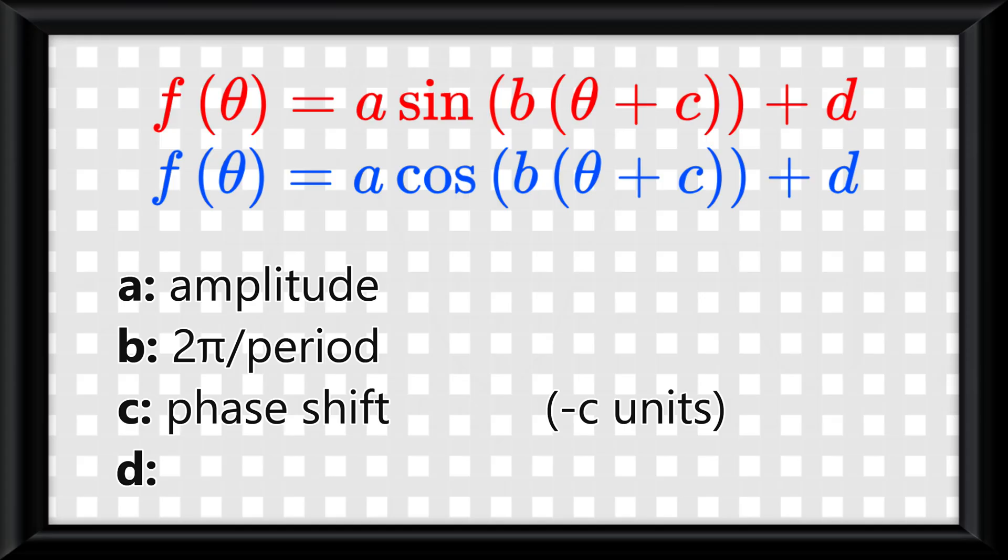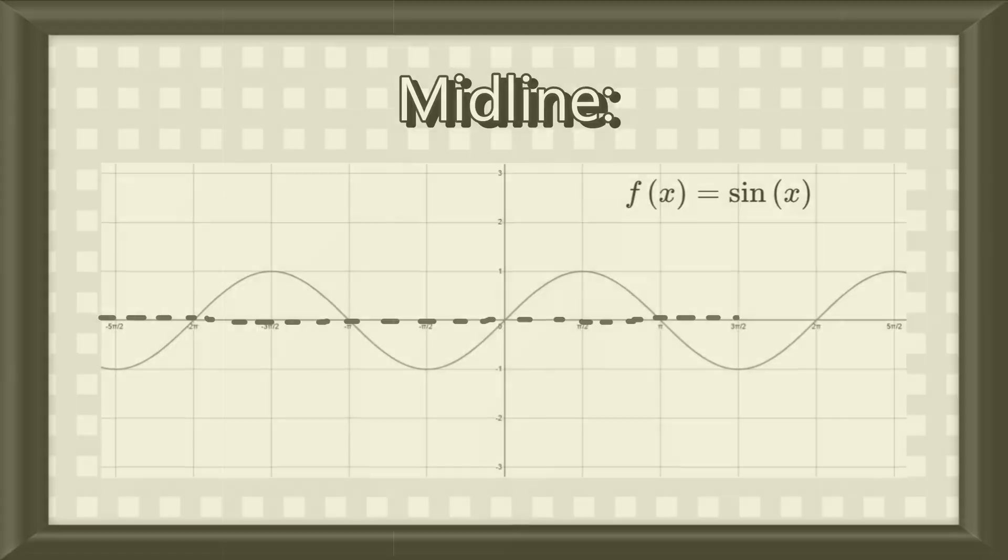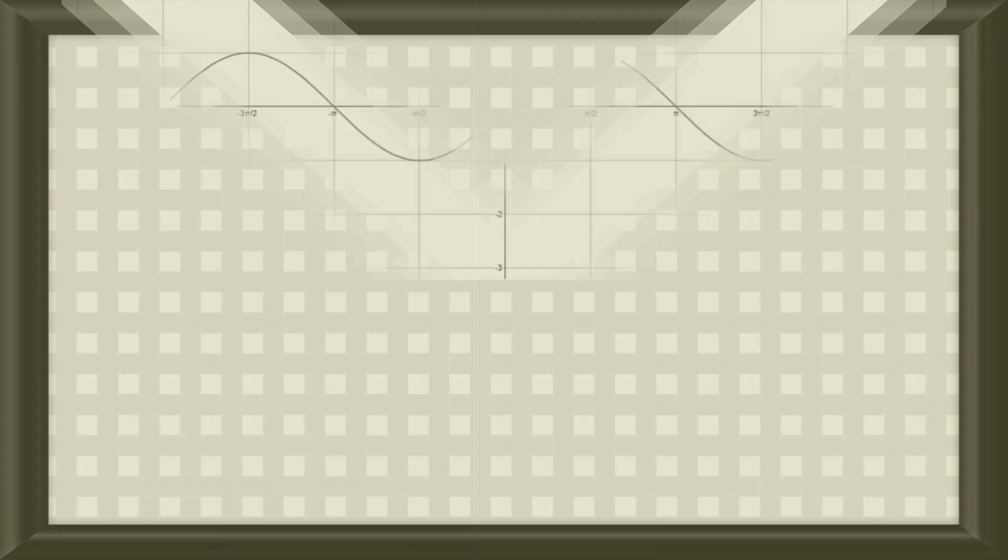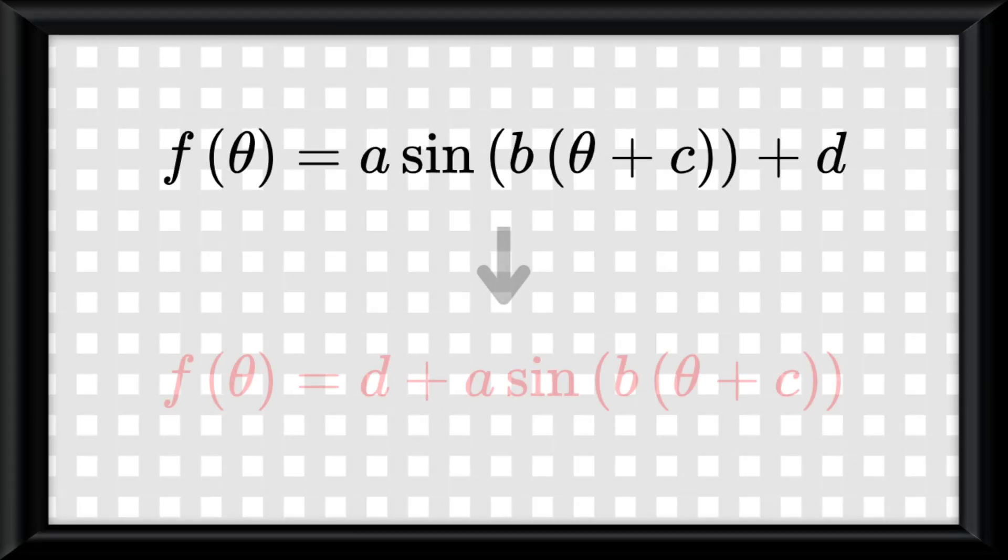And finally, D is your vertical shift, but you know it better as the midline. And if you want to know what that is, roll the clip! A midline of a sinusoidal function is the invisible line that's halfway between the minimum and maximum points. The midline of the parent sine and cosine graphs is y equals 0. I should also mention D can be on the front of the equation as well and mean the exact same thing.